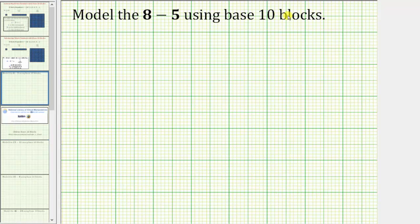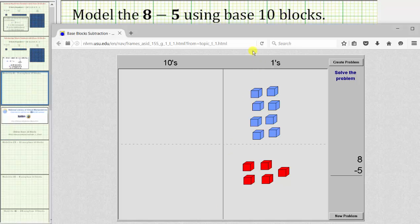Let's begin by modeling 8 minus 5 using base 10 blocks. Using the online base 10 blocks, we first model 8 using the blue base 10 blocks—8 is equal to 8 units. Then we model 5 using the red base 10 blocks, which is 5 units.